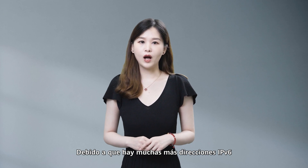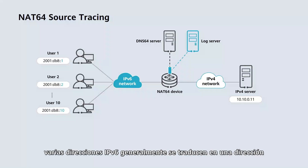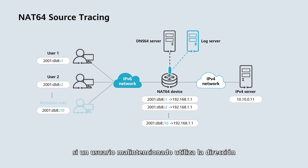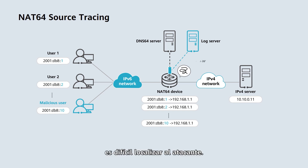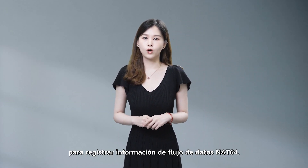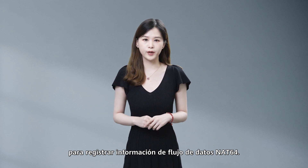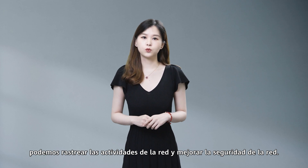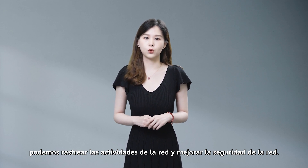Because there are many more IPv6 addresses than IPv4 addresses, multiple IPv6 addresses are usually translated into one IPv4 address to allow more addresses to be translated. In this case, if a malicious user uses the post-translated address to initiate an attack, it's difficult to locate the attacker. To address this issue, the NAT64 ALG function is provided to record data flow information. By checking the pre-translated address information, we can monitor network activities and improve network security.